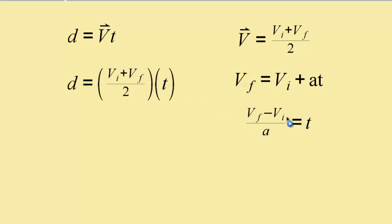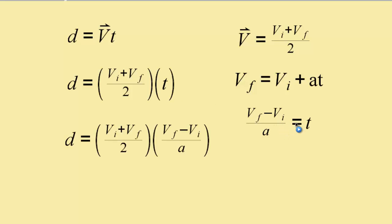I'm going to substitute this expression for t because this says those two are equivalent. When we do, we end up with this rather complex-looking expression: initial velocity plus final velocity divided by 2, multiplied by final velocity minus initial velocity divided by acceleration.